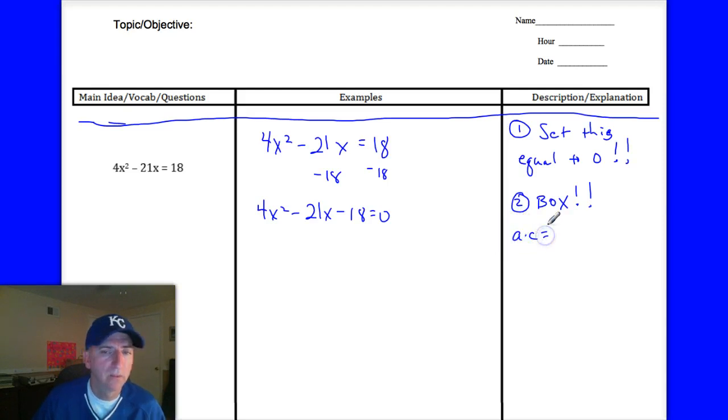So review the box. We take A times C, which is 4 times negative 18, and that is equal to negative 72. And we want to know what factors of negative 72 equal B, which is negative 21. So I went ahead and worked these through. You can try them through. It's not 1, 72. It's not 2, 36. But then I came across negative 24, 3. Negative 24 times 3 is negative 72. And if I add negative 24 plus 3, I do get negative 21. So I'm happy. Here are my factors, these two factors right here.